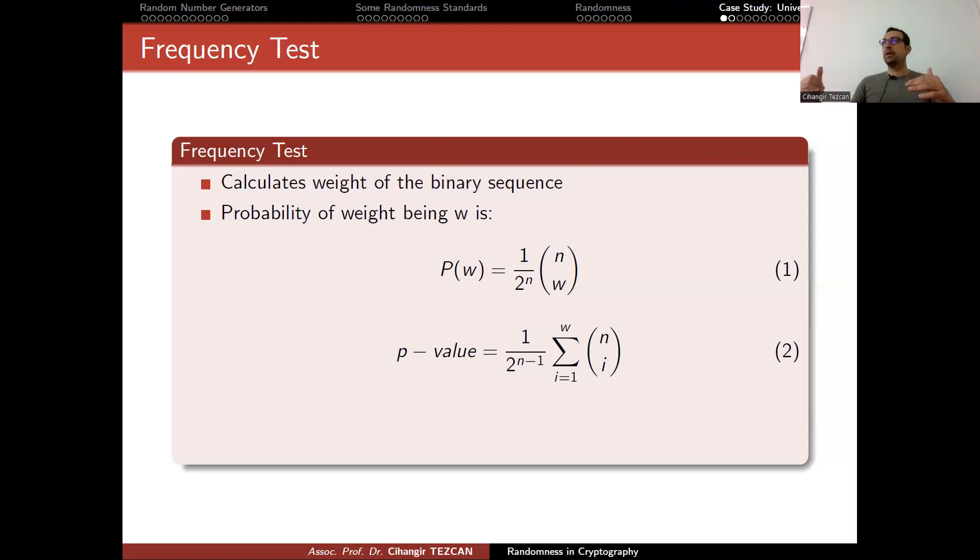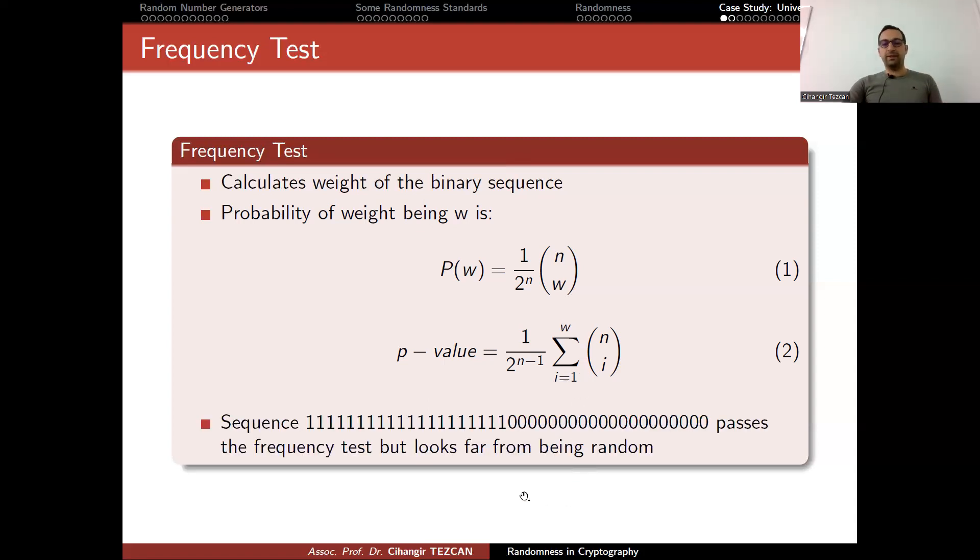You put a threshold beforehand, like 0.001. When you have a sequence, when you calculate the weight of it, just check what kind of p-value that weight has. If it is larger than your threshold, then you will say that it fails the test. A statistical test is as simple as that - you need a way of calculating a p-value and checking if it is lower than your threshold.